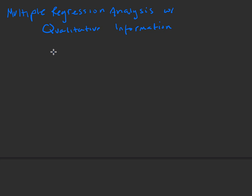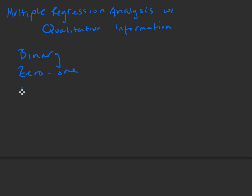The way that we bring in qualitative information — like married or not married — is going to be using a binary variable. And there are many names for this variable. We have binary, we have 0-1, you'll see dummy variables — I'll often use this term, dummy variable. You'll see the term categorical, because we're looking at categories. Dichotomous, because it just takes two values: 0 and 1.